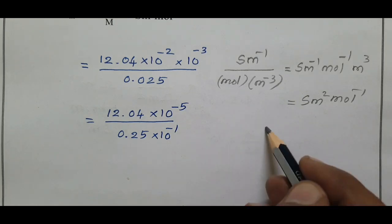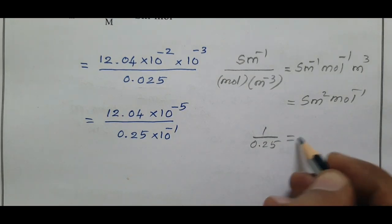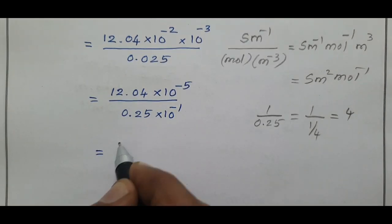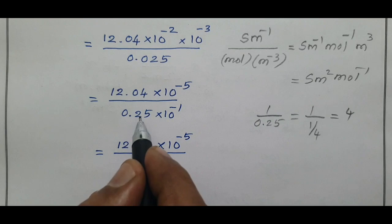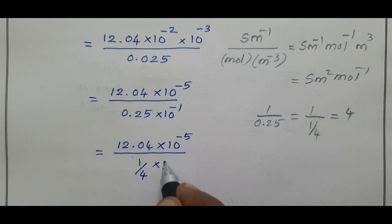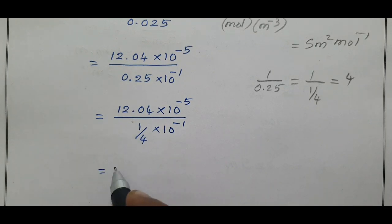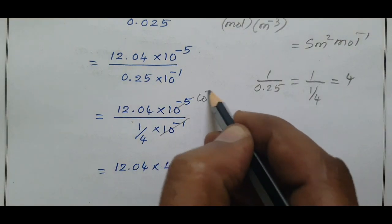Since 0.25 equals 1/4, we can write 12.04 × 10⁻⁵ divided by (1/4 × 10⁻¹). Bringing 1/4 and 10⁻¹ to the numerator gives 12.04 × 4 × 10⁻¹ × 10⁻⁵, but the 10 powers cancel to give 10⁻⁴, so we have 12.04 × 4 × 10⁻⁴.